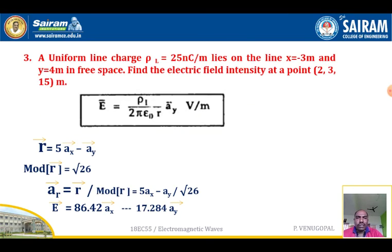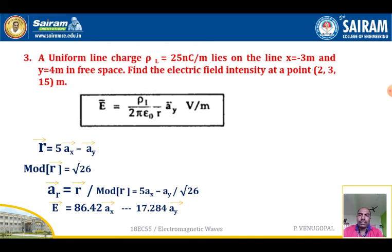Third problem: A uniform line charge with line charge density rho-L equal to 25 nanocoulombs per meter lies along the line x equals minus 3 meters and y equals 4 meters in free space. Find the electric field intensity at a point (2, 3, 15) meters. The formula for electric field intensity due to infinite line charge distribution is E equals rho-L divided by 2 pi epsilon-0 times r, times the unit vector a_r, in volts per meter.